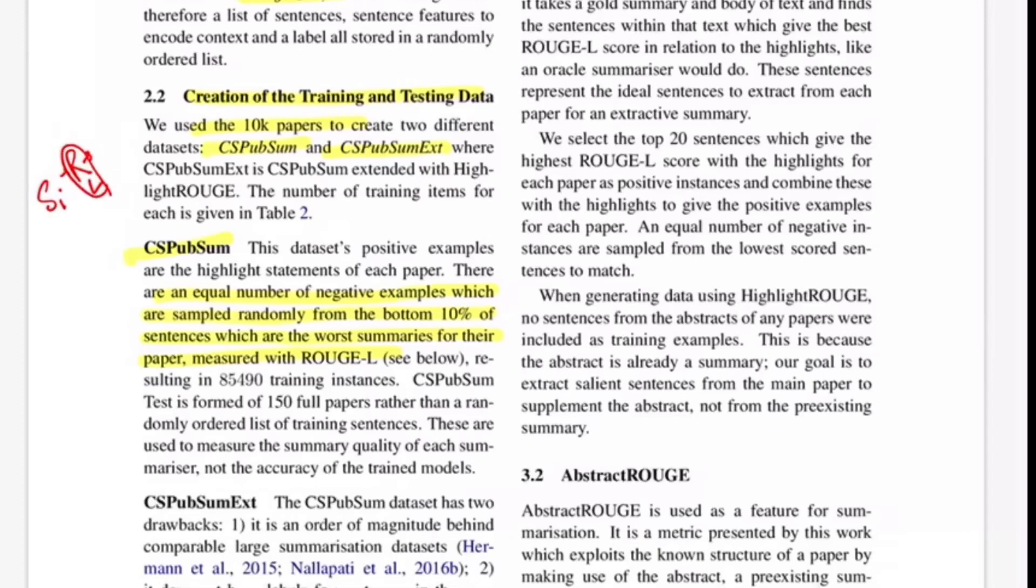For every sentence in the document, they do a ROUGE-L comparison with the highlight and give a score to each sentence. If you had 10 sentences, you'd give some score to each. Considering these are in sorted format, you pick last 10 percent of sentences, then pick k samples from this lower 10 percent equal to positive samples in the dataset. This is how they create their dataset of negative and positive samples which are equally balanced.